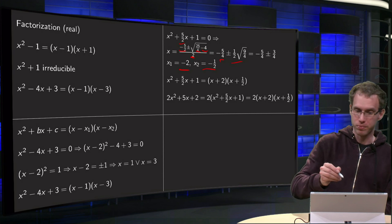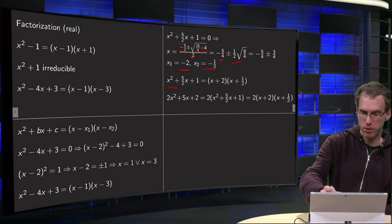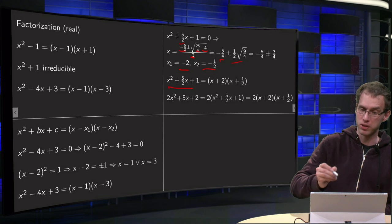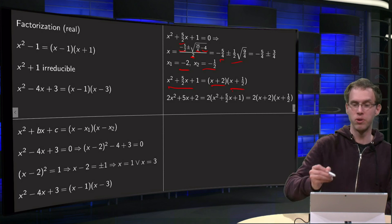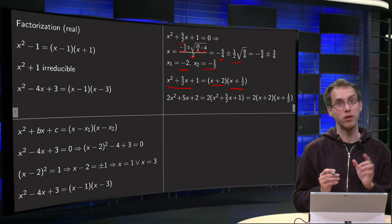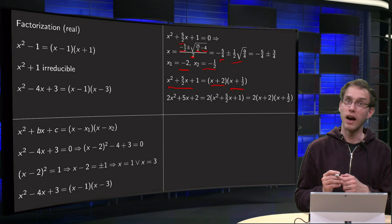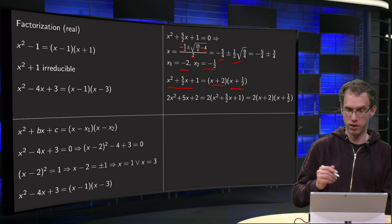So we know that our polynomial, x² + 5/2x + 1 = (x - x₁)(x - x₂), where x₁ = -2, so we get (x + 2), and x₂ = -1/2, so we get (x + 1/2).